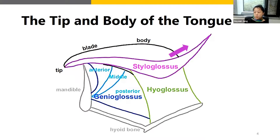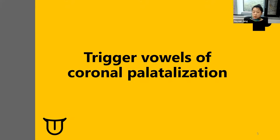The blue-colored muscle group genioglossus fans out into the whole area of the tongue. Specifically, the genioglossus posterior is in charge of moving the tongue forward because its contraction direction moves the tongue forward. So if the tongue body moves forward in the vocal tract, the tongue tip is likely to be more anterior too. But the interaction between the tongue tip and the body is more complex — beyond just the physical connection between tongue tip and body.